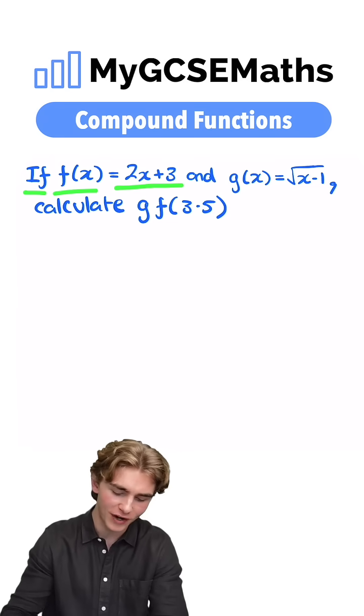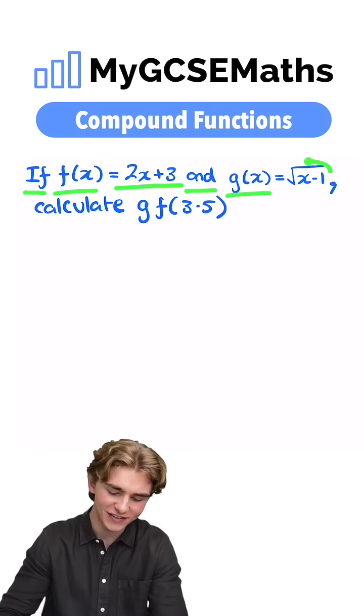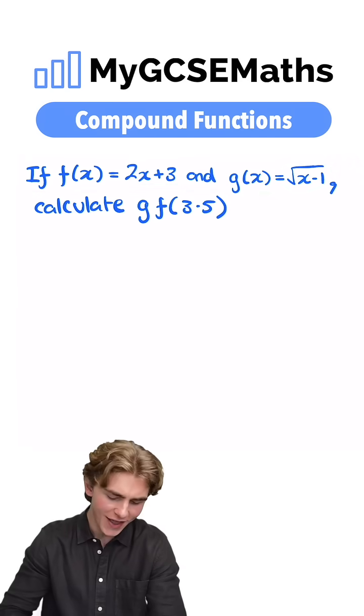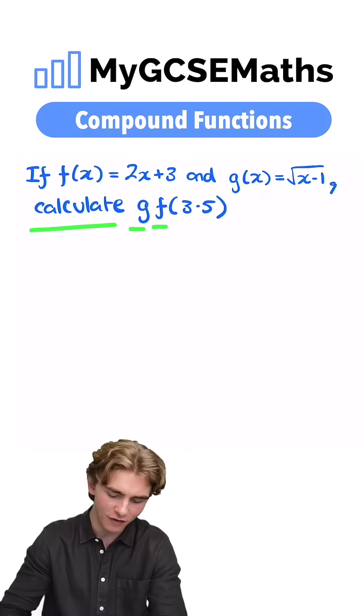If f(x) = 2x + 3 and g(x) = √(x - 1), calculate g(f(3.5)).